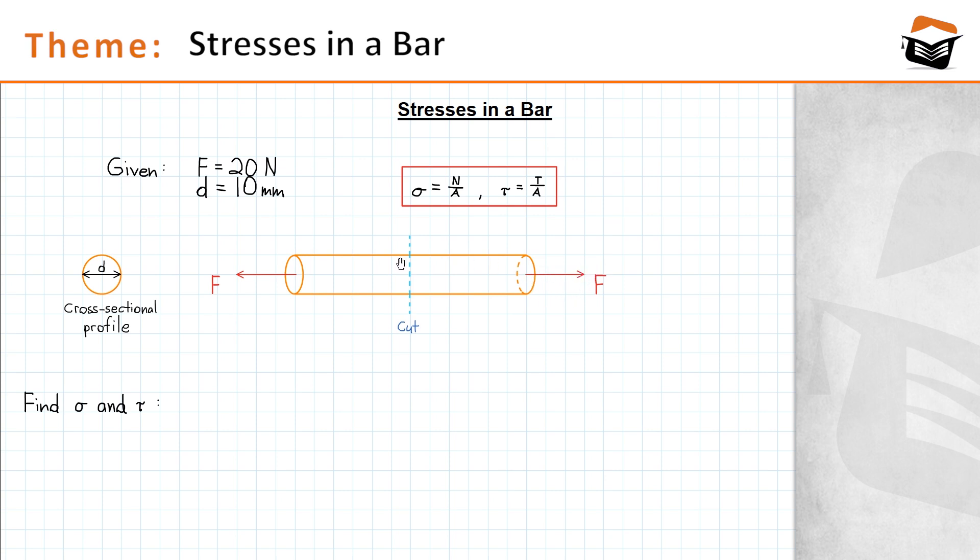Don't think that just because I have drawn two force vectors, each one representing a tension force, that the total net force acting on the bar is 20 Newton times 2. That's because one force represents the reaction force of the other force.